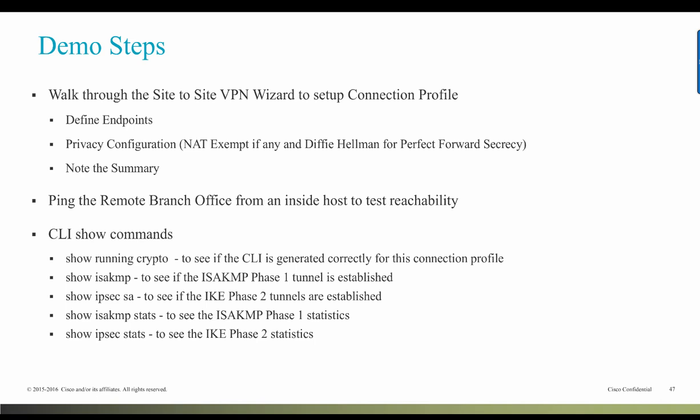Let's note the demo steps we'll be following. First, we'll walk through the Site-to-Site VPN wizard available within Firepower Device Manager to set up the connection profile. We'll define the endpoints, the privacy configuration, and if needed, NAT exempt or the Diffie-Hellman algorithm for perfect forward secrecy. For this demo I do not need those. Then, walking through the wizard, we'll review the summary, which will bring up the tunnel between the FTD and the ASA. We'll test reachability to the remote branch office by pinging the remote host address, and use CLI show commands to check the VPN tunnel.